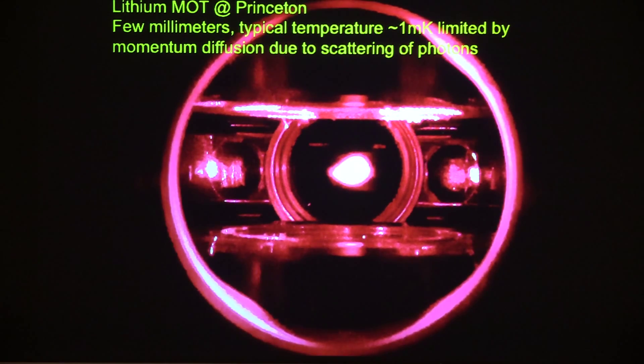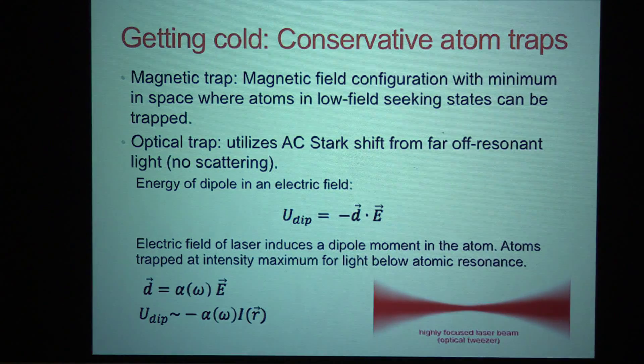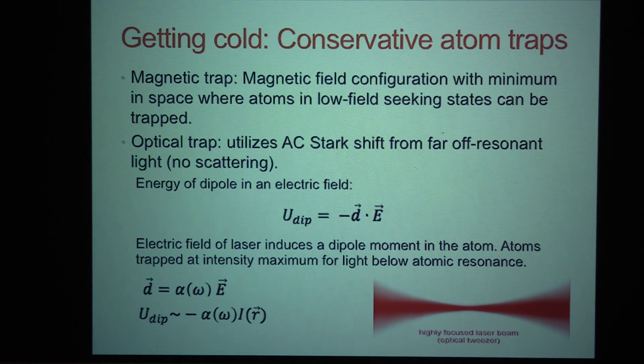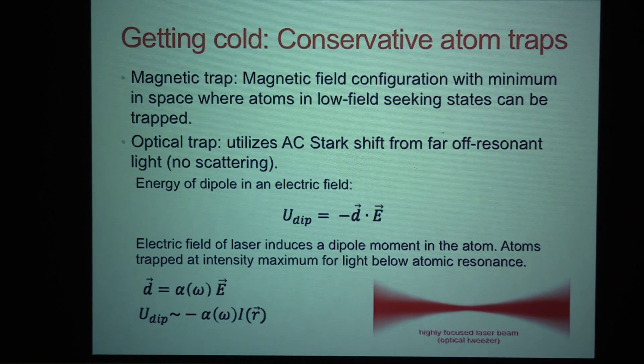Now, however, the temperature is still too hot for degeneracy. And we'd like to get colder. And the limit now is the fact that they're scattering photons. So although those photons cool them down, the fact that you're still scattering photons means there's always some residual momentum for the atoms. So to get even cooler, we need to switch off the light, we need to put the atoms in the dark. And for that, we have to load them into a conservative trap, one that doesn't involve spontaneous scattering of photons. And we have a couple of tools to get there.